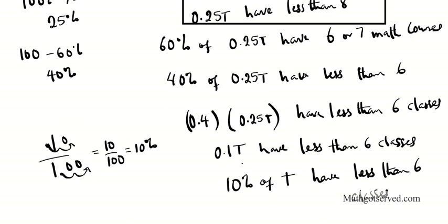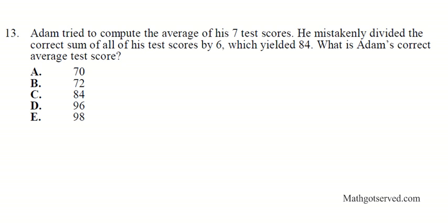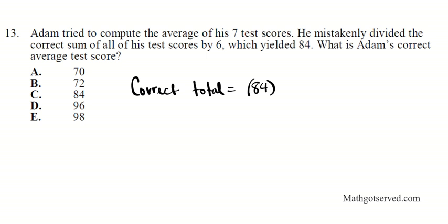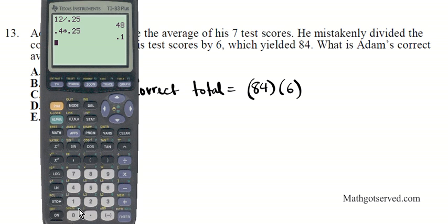Question number 13: Adam tried to compute the average of his 7 test scores. He mistakenly divided the correct sum by 6, which yielded 84. What is Adam's correct average test score? We need to find the correct total first. The correct total is the average multiplied by the number of scores used — so 84 times 6 equals 504. This is the correct total.